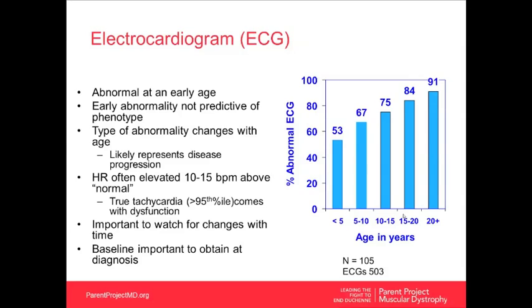Looking at EKGs, we found that abnormalities appear at a very early age — even infants diagnosed prenatally due to family history often have abnormal EKGs in early infancy. Early abnormalities are not predictive of clinical course; an abnormal EKG at age 3 does not necessarily mean earlier heart failure than someone with a more normal EKG. The type of abnormality does change with age, likely representing disease progression, as fibrosis becomes more extensive in the heart muscle.